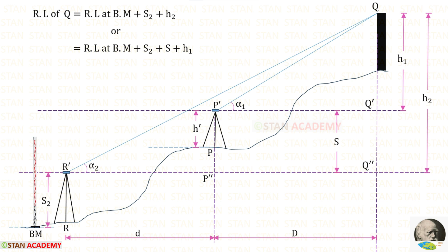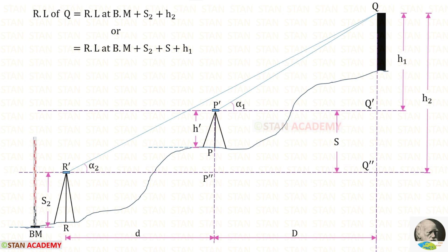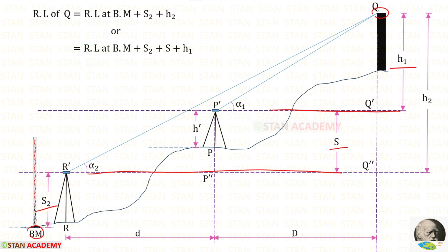Now let us see how to find the reduced level at the top of the tower, that is at point Q. First method: to the reduced level of the benchmark we add S2 to reach the instrument axis line at R, then add H2 to get the top of the tower. So RL of Q equals RL of benchmark plus S2 plus H2. Second method: add S2, then add S to reach the instrument axis line at P, then add H1. So RL of Q equals RL of benchmark plus S2 plus S plus H1.